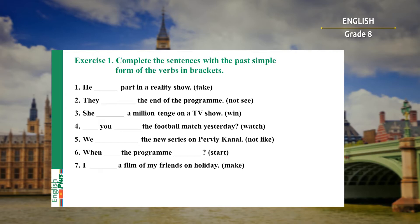Now let's check. Sentence number one: 'take' is an irregular verb, and the first sentence is positive, so I need to put 'take' into the second form. He took part in a reality show. Second sentence is negative, so I need to put verb 'see' into the past negative form: They didn't see the end of the program. Third sentence is positive; 'win' is an irregular verb, so I put 'win' into the second form: She won a million on a TV show.